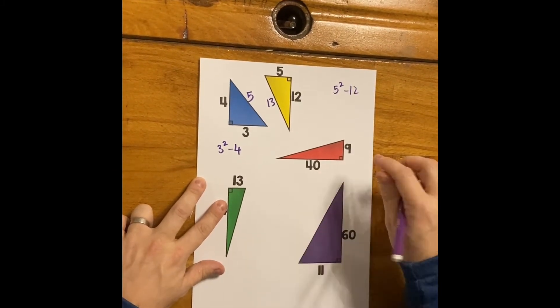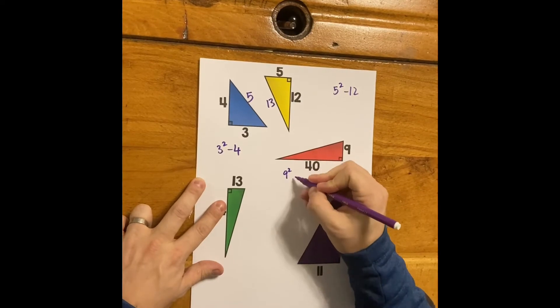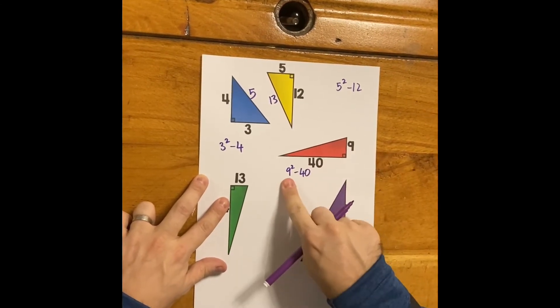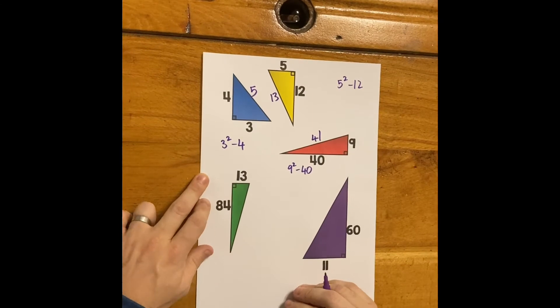This one here, I take the smallest side, 9 squared, take away 40. 9 squared's 81, take away 40, 41. Boom.